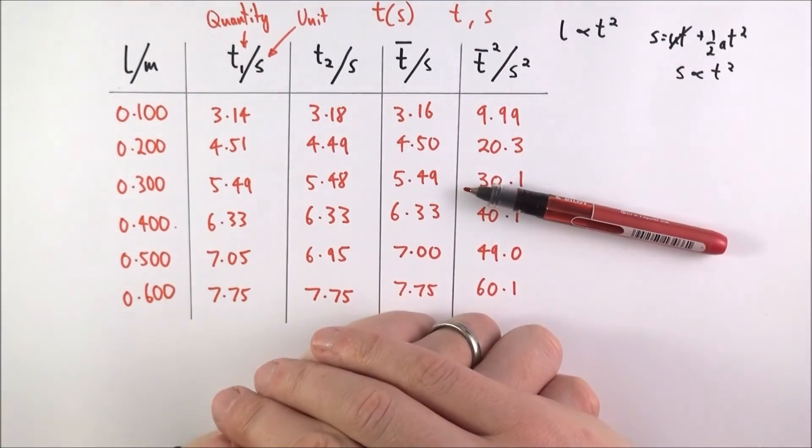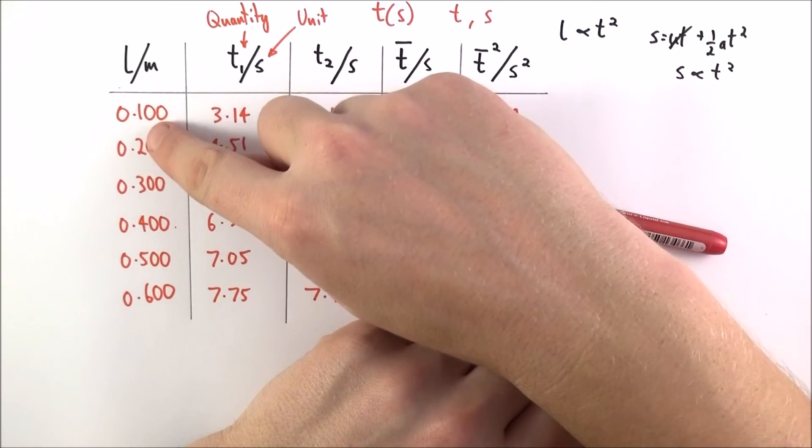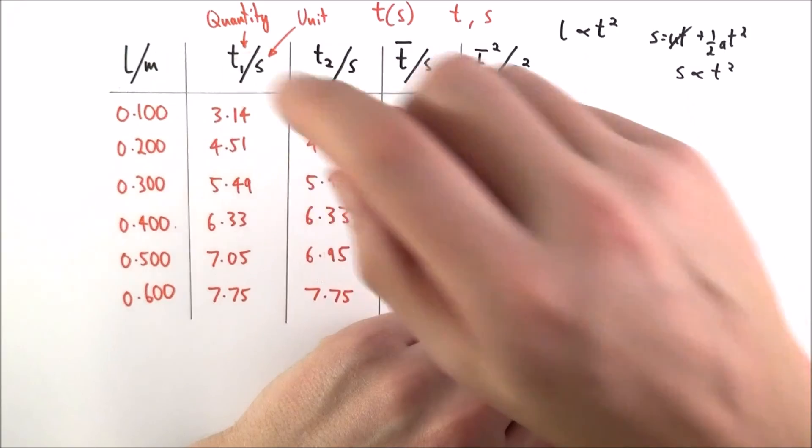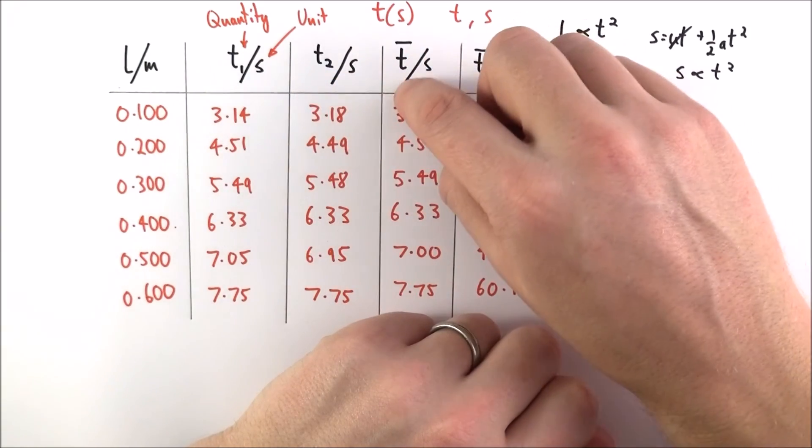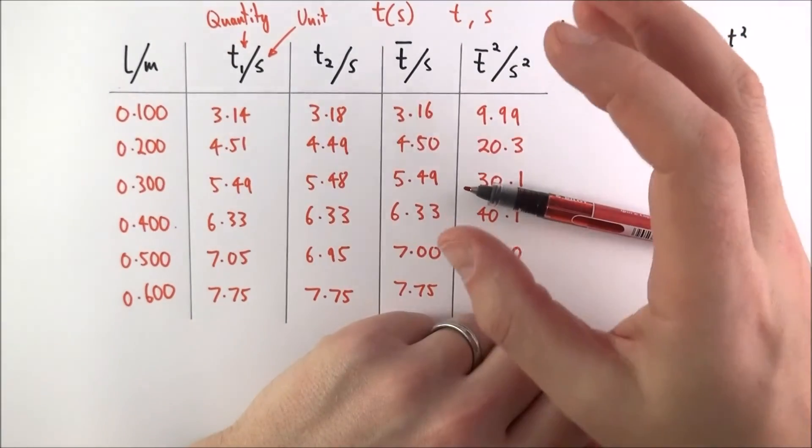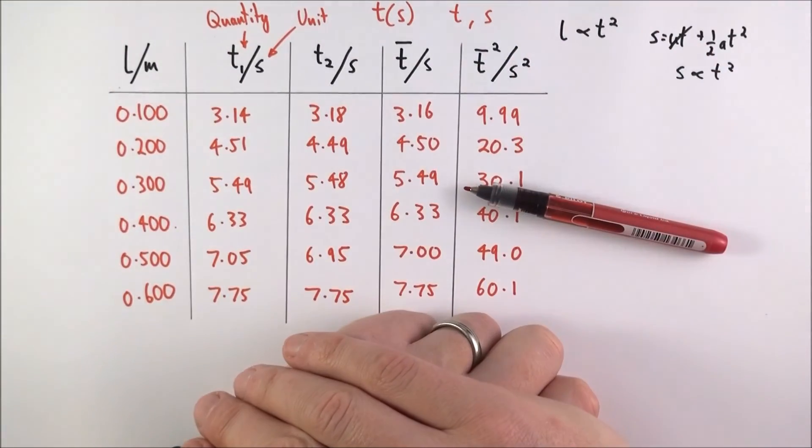But basically that is what you need to do when you draw a table. You have your quantity and your unit, you have enough values which record it to an appropriate amount of significant figures based on what you're measuring, and also you have your repeated values, your mean values and any calculated values as well. And if you can follow those basic rules then there shouldn't be any problems when it comes to recording your data in the future.